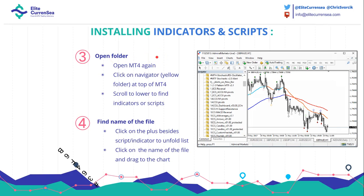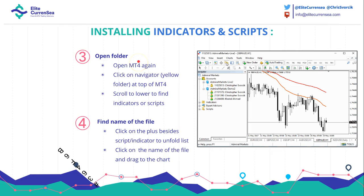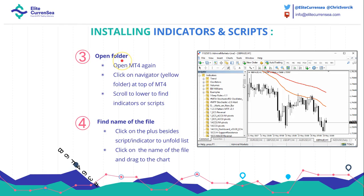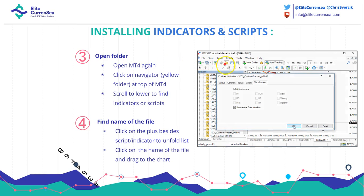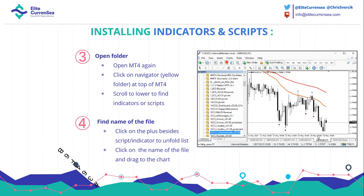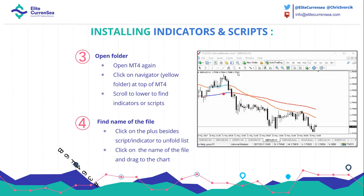Let's continue to installing — or rather using — the file. Now that you've saved it, you want to open MT4 again. You closed it in the first step, but now you want to reopen it. Then click on the yellow Navigator button at the top of MT4, as you can see in this example. Scroll down and find Indicators or Scripts — you have to find the name that you're looking for. That's it.